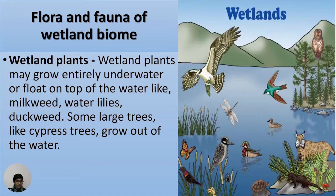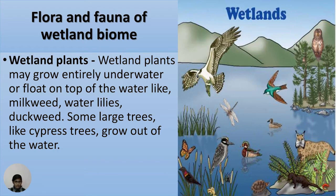Flora and fauna of wetland biome: Wetland plants may grow entirely under water or float on top of the water — like milkweed, water lilies, and duckweed. Some large trees like cypress trees grow out of the water, while some plants float on the surface like tulips and lilies.